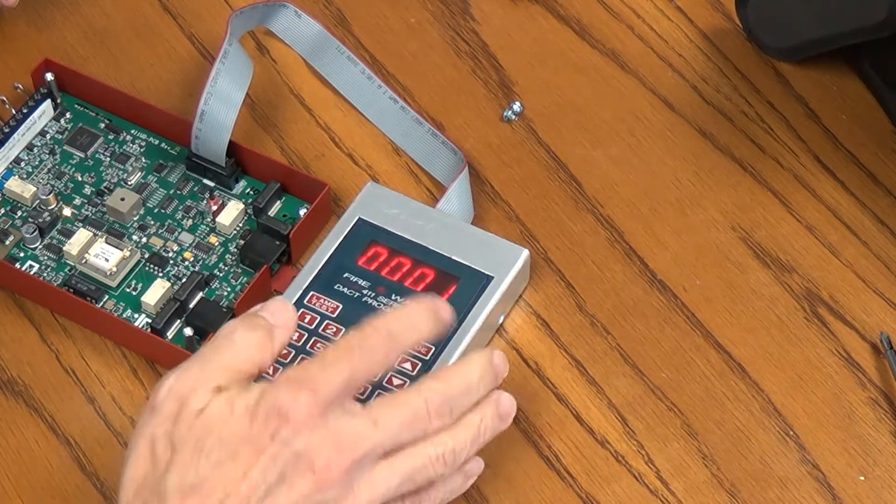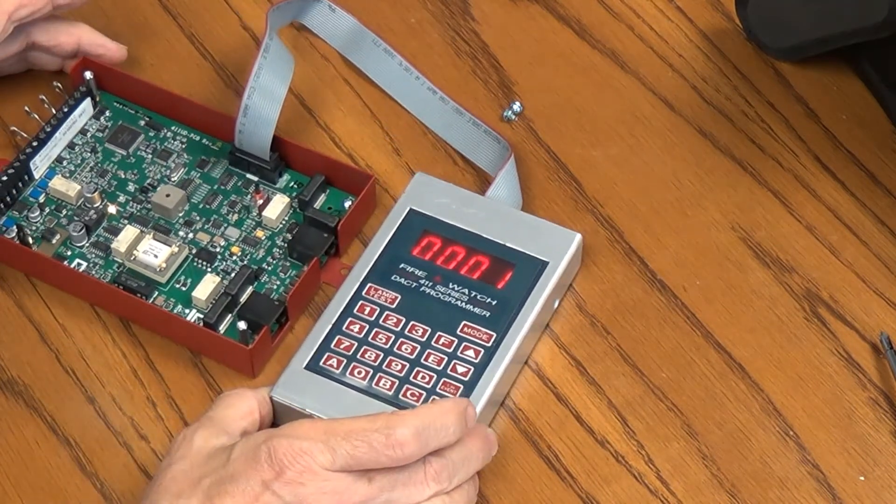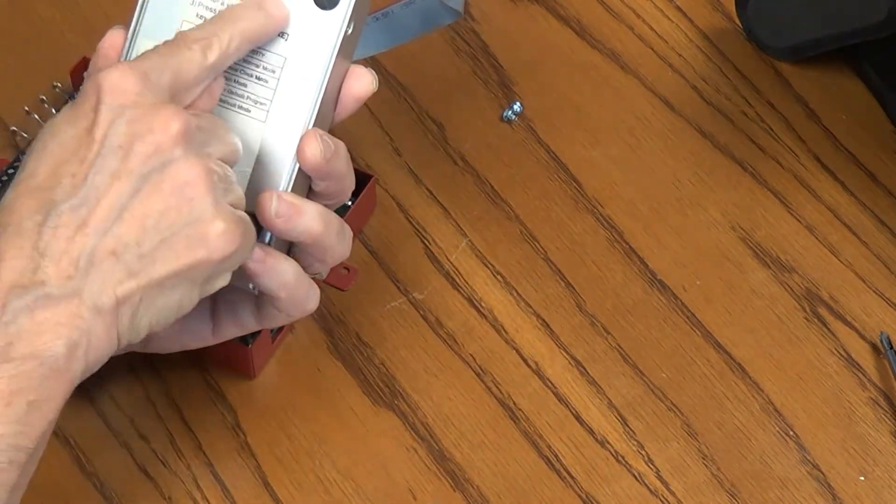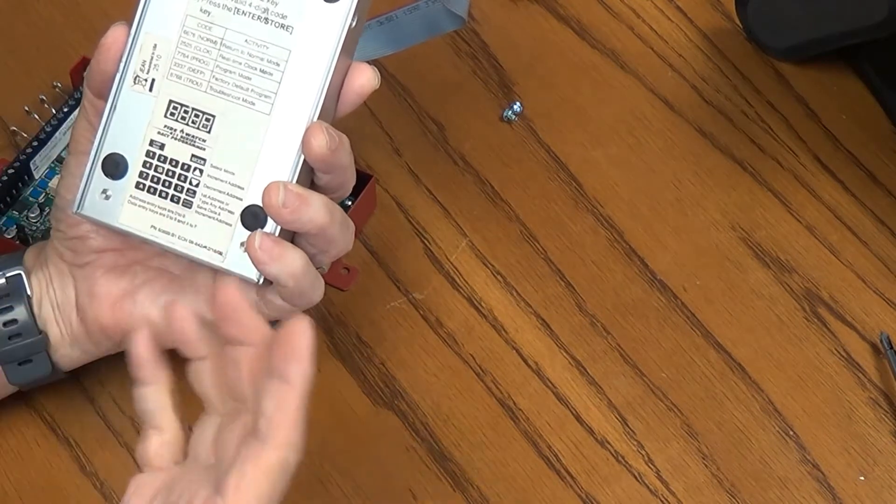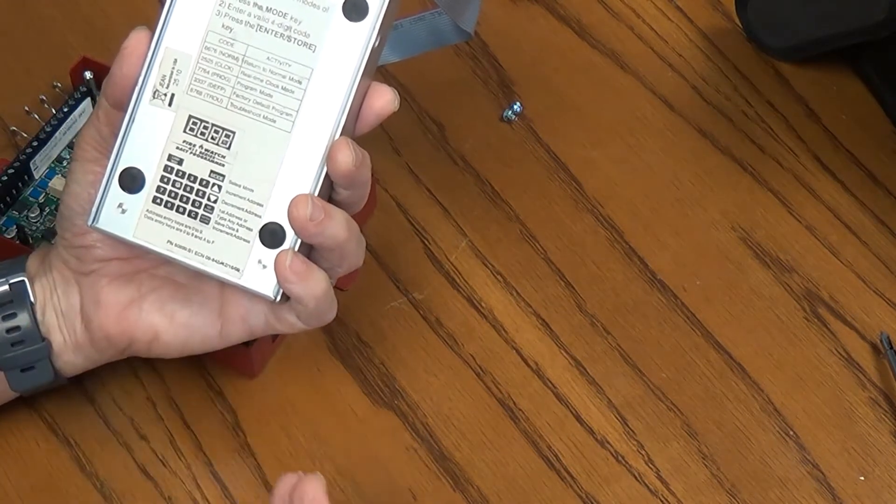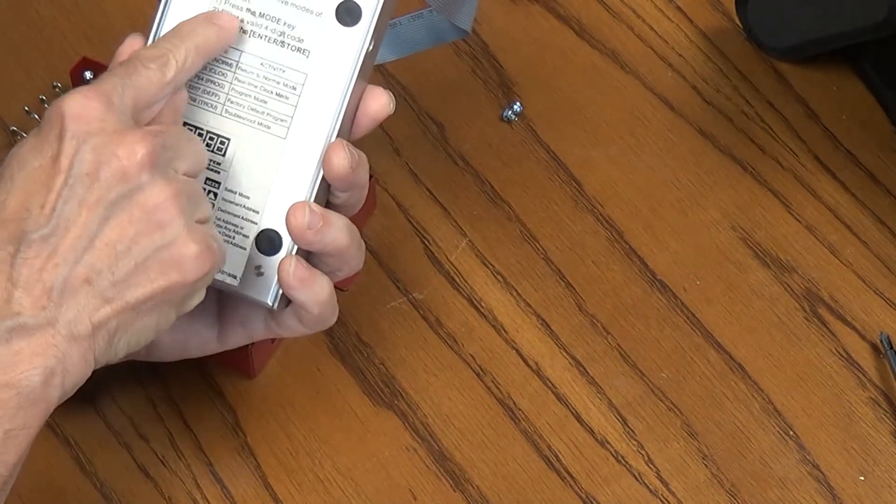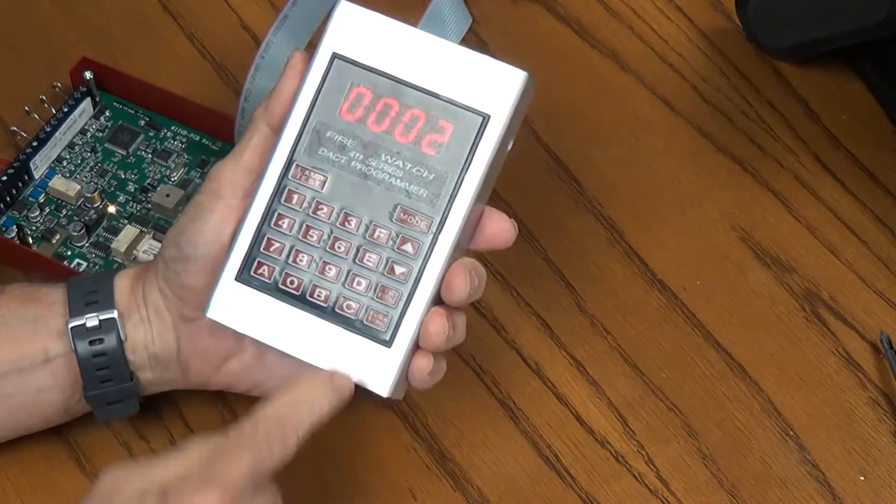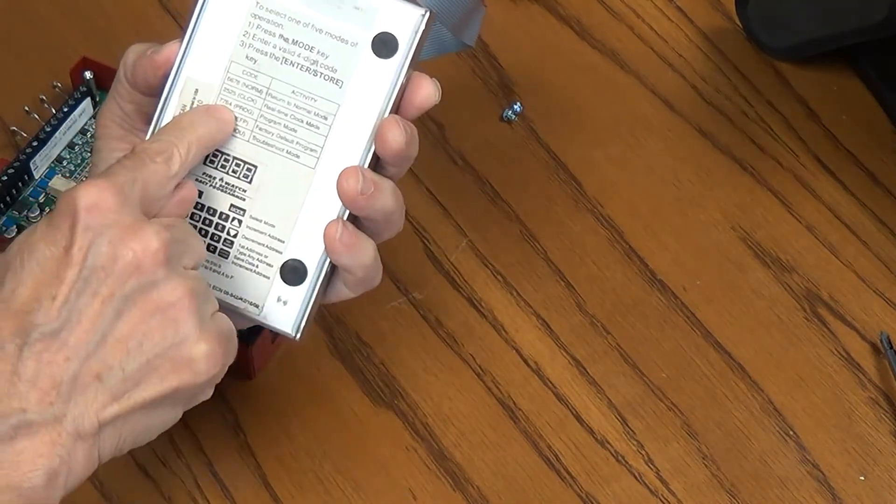Now you'll notice that the 411 programmer is lit up. Now we can use this to start programming the 411 dialer. There are instructions on the back of this. Basically it says there's five modes of operation. We're going to use two today. One is program, which will put the card into programming mode so we'll be able to actually configure it. And then there's normal, which will end that programming and bring it back to normal operating. It says press the mode key, enter a valid four digit code, and then press enter store. To program, it's 7764.